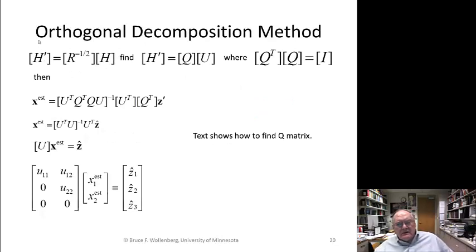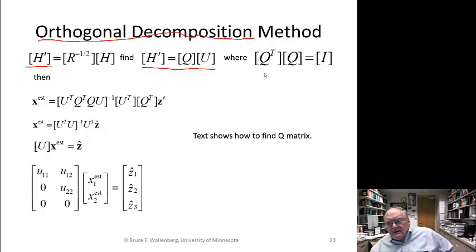So now along came several researchers and they read a lot of literature on least squares and discovered that there was another method called orthogonal decomposition. Here's the secret of it. We take R to the minus one half. We take the square root of R and we take its inverse. Multiply that times H, we call that H prime. And then we say, well, H prime is equal to a matrix Q times a matrix U. And Q has this property over here. It's got this property that the Q transpose times Q is equal to the identity matrix. So Q is, the transpose times Q is equal to its inverse. So its inverse is Q transpose.